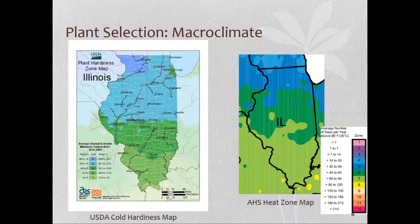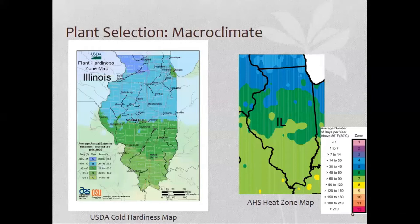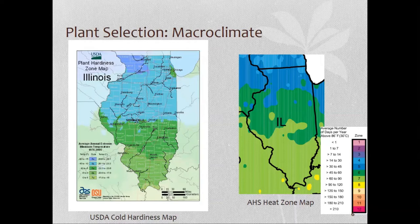The heat zone maps and hardiness zone maps aren't exactly the same — hardiness zones speak to cold tolerance while heat zones address maximum summer temperatures. Most plant tags today list both ratings. I always think in terms of hardiness zones. If a plant is at the edge of its range for cold or heat, pay closer attention to whichever is the limiting factor. It's safe to say that if you're in the middle of a plant's hardiness range, it'll do pretty well. It's the plants on the fringe that are sometimes difficult.